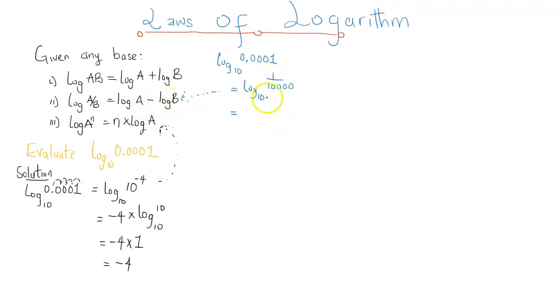So log 1 over 10,000 base 10 is going to be log 1 to base 10 minus log 10,000 base 10. Now I would want the number here to tally with the base, and so I know that 10 raised to the power of 0 is 1. Any number raised to the power of 0 other than 0 is 1, but I'm going for 10 so that the number and the base will be the same.